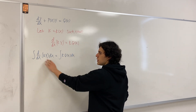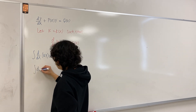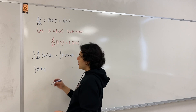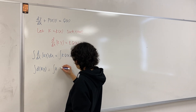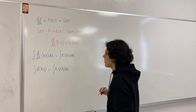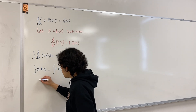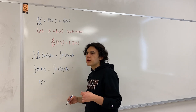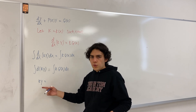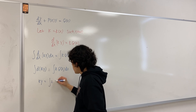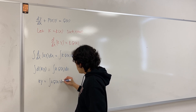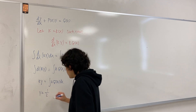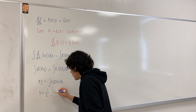Now what happens on the left side? The dx's cancel out, and you just get the integral of d(ky), which gives k times y. On the right-hand side we have the integral of k times q of x dx. So we have k times y equals the integral of k q of x dx. The goal when solving a differential equation is to find y, and something wonderful happens here: on the left-hand side we have k times y, and if we divide both sides by k, we have a formula for y.